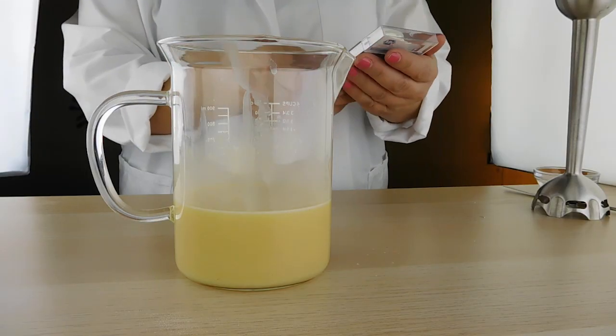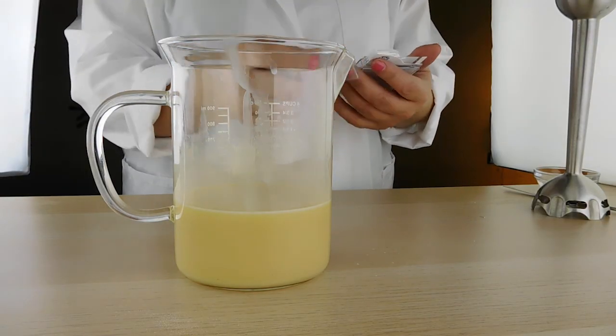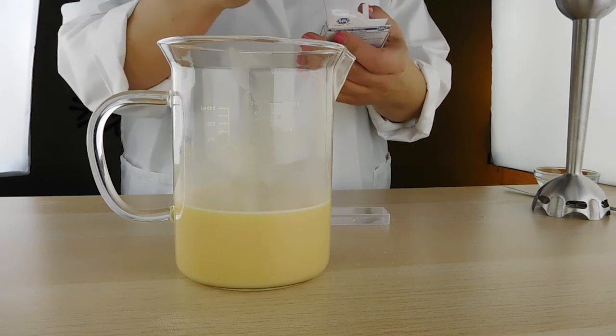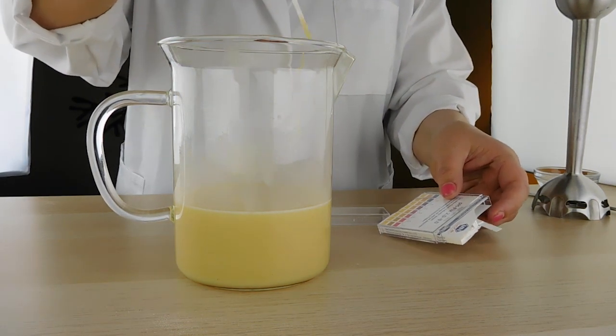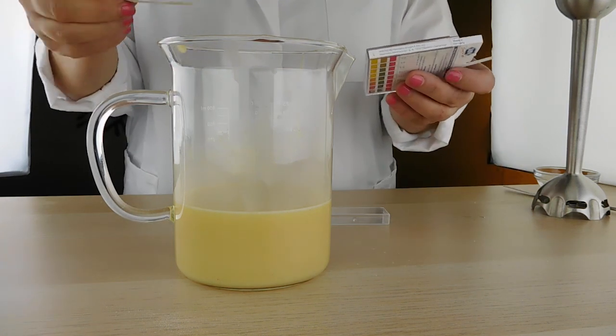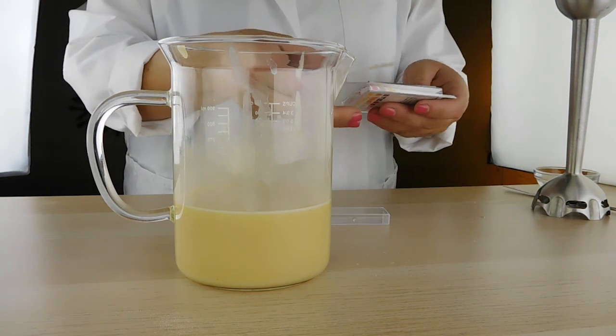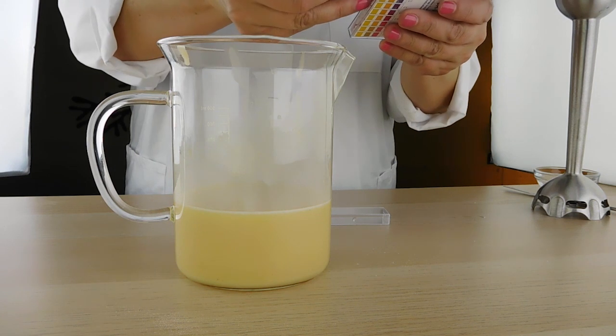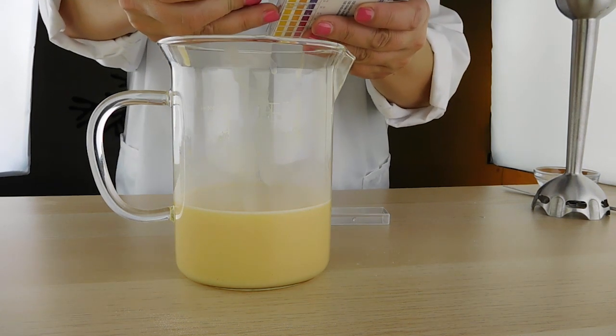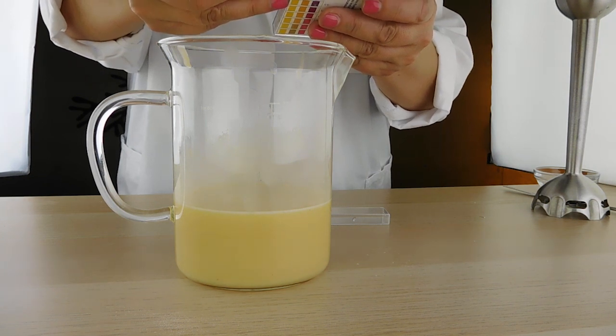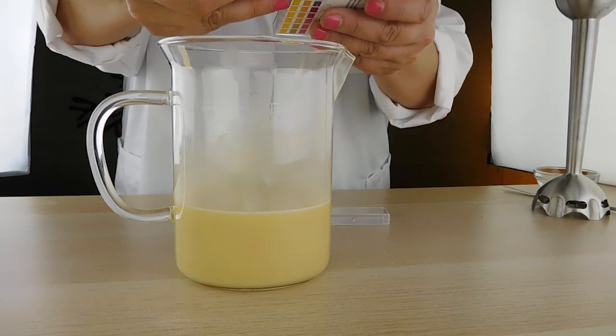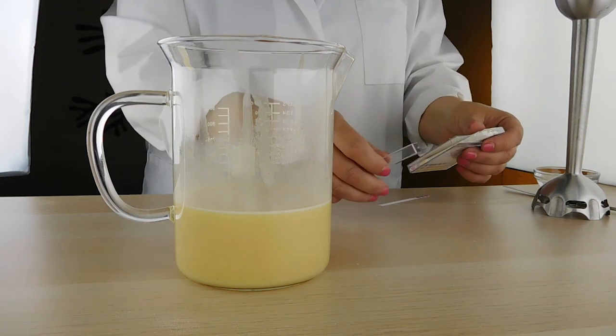Okay so we're going to test the pH now of our eye cream and of course you can buy these pH strips on our website. If I look at the pH it's pretty darn high, way higher than we want it to be. It looks to me to be up like nine, like up in the higher end of the pH range. So we're going to have to adjust that down.